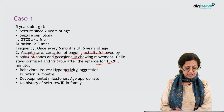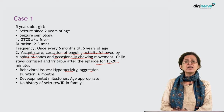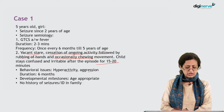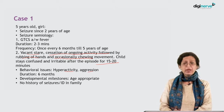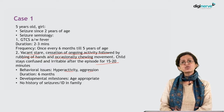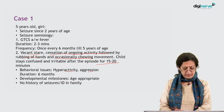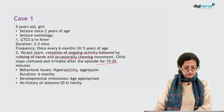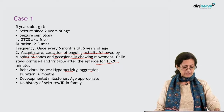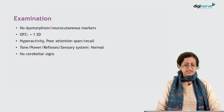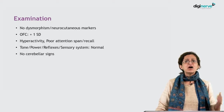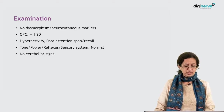The child had hyperactivity and aggression for the last six months. Developmental milestones were age-appropriate, and there was no history of seizures or intellectual disability in the family.